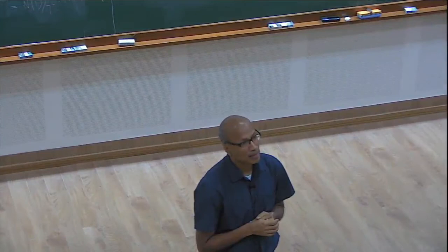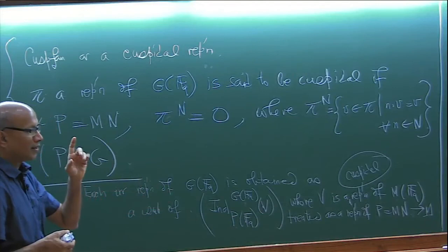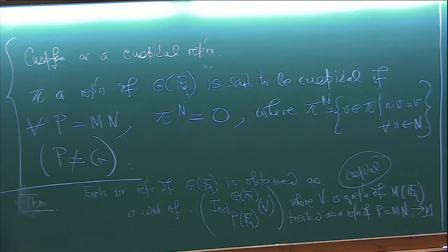For each irreducible representation there is a unique Levi subgroup M and cuspidal representation V, up to conjugation — so one can uniquely write any representation in this induced form with cuspidal data. This is called the cuspidal support of the representation. Every representation which is not cuspidal has a cuspidal signature on a proper Levi subgroup, unique up to conjugacy. The parabolic is not unique and there are some small details.